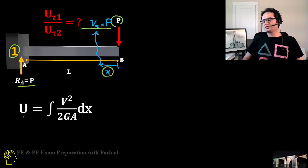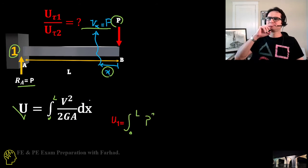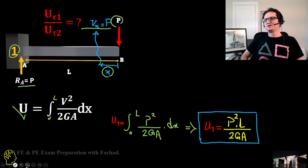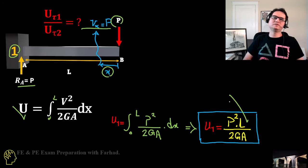We know from strain energy calculation that strain energy in shear is the integration from 0 to L of V_s² over 2GA times dx. So U for scenario one is the integral from 0 to L of P² over 2GA dx. Integration of 0 to L dx equals L, so that's P²L over 2GA for scenario one.